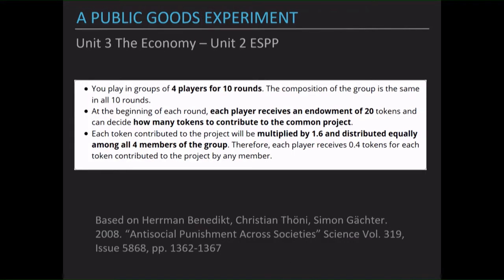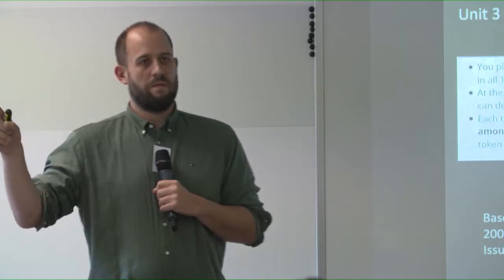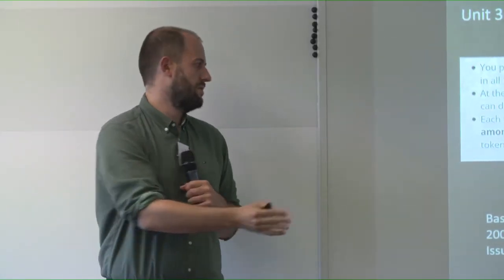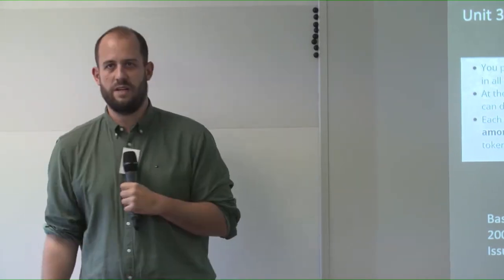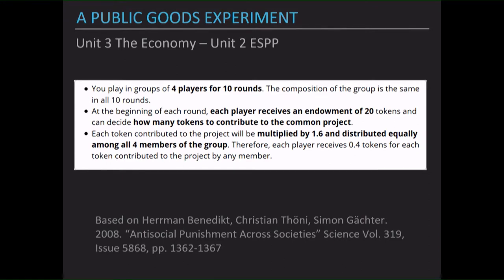We play a second game, and the nice thing is you're all locked in now, so we can easily play one game after the other. We play something very much related to CORE — Unit 3 in The Economy, Unit 2 in ESPP — that was the public goods game. We chose exactly the version from the famous Science paper to be very close to the standard. You will play in groups of four for ten rounds, with the same composition throughout. Each player receives an endowment of 20 tokens and can decide how many to contribute to the common project. Each token contributed is multiplied by 1.6 and distributed equally among all four members, so each player receives 0.4 tokens for each token contributed by any member.